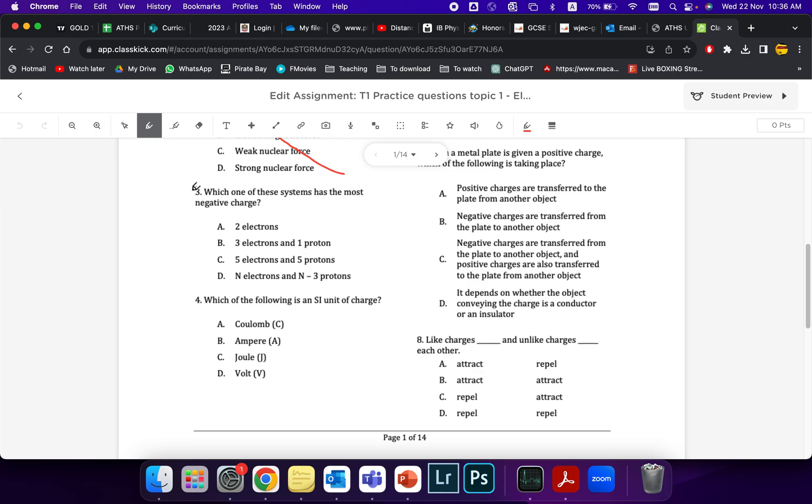Looking at this, which system has the most negative charge? If you look at all of them, you will see that this is going to be overall negative 2. 3 electrons and 1 proton, so that's minus 3 plus 1, that's also minus 2. 5 electrons and 5 protons, they cancel. N, meaning any number, and N minus 3 protons means any number of electrons with 3 less protons. So this is always going to be the case, that will end up being D.